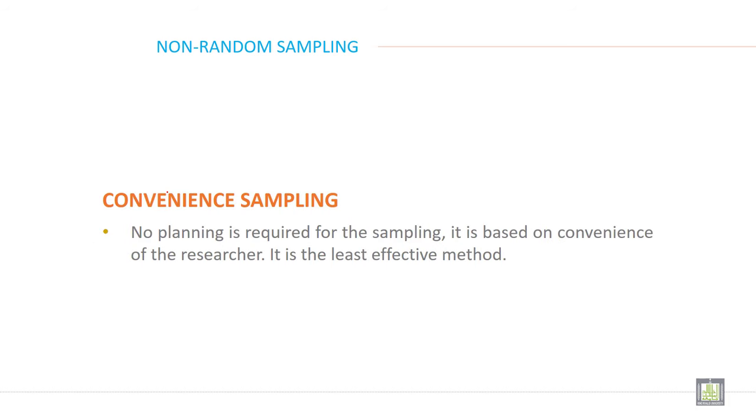What is convenience sampling? No planning is required; it's based on the convenience, easiness, and availability of the researcher. It is the least effective method. For example, including your friends in the study or taking the first 50 or last 50 patients from the population are examples of convenience sampling.